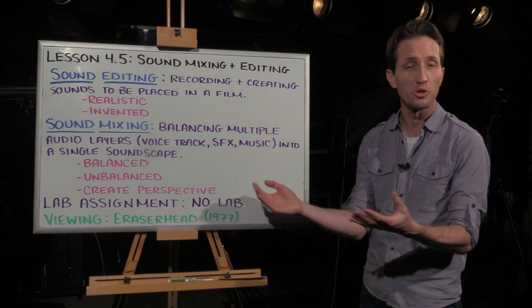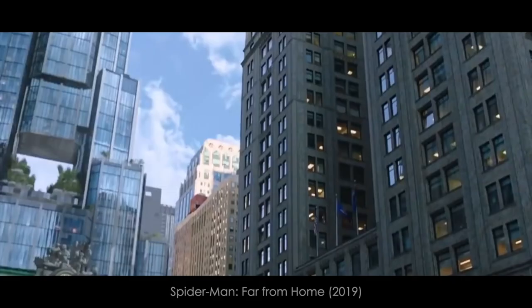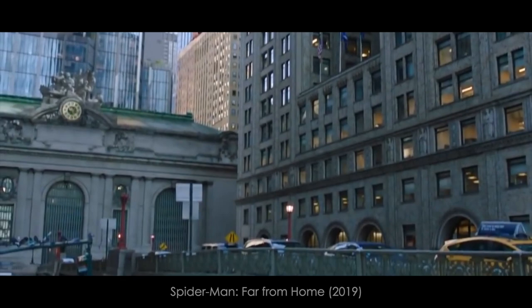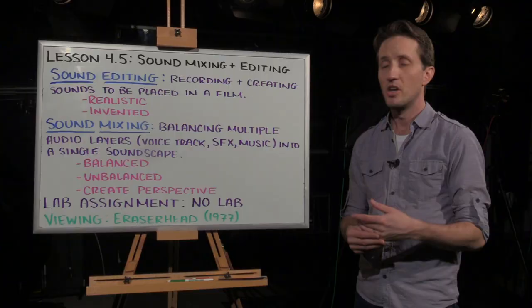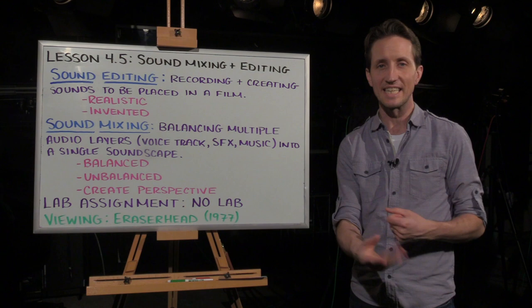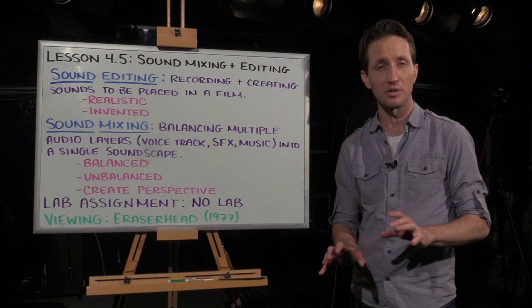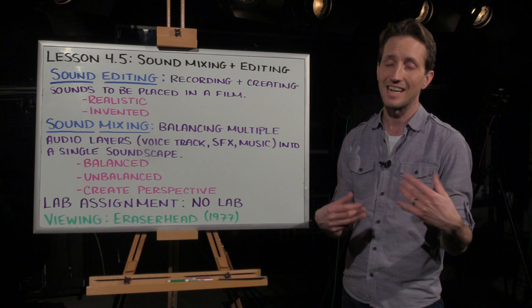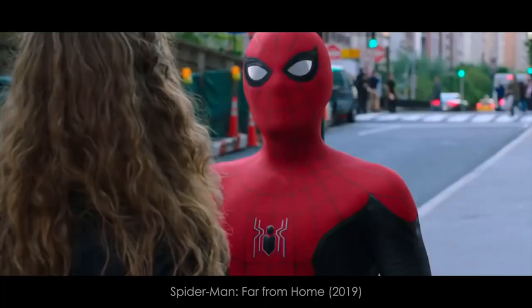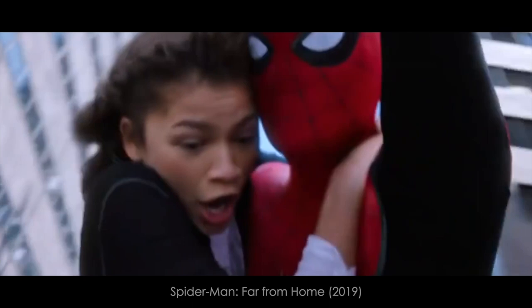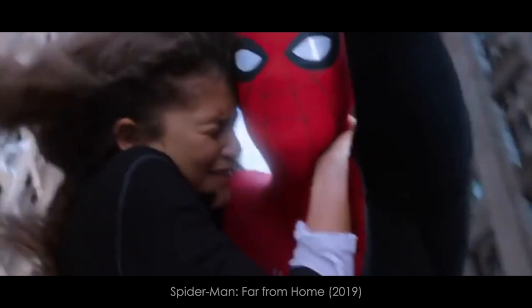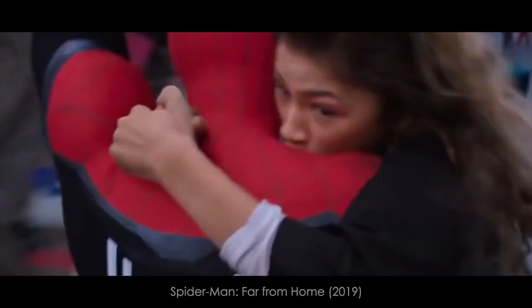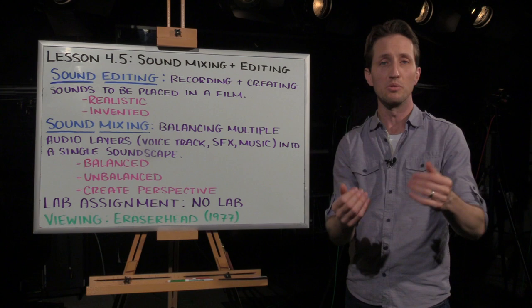You can also use your audio mix to create perspective, which is something we've already talked about. In this example from Spider-Man: Far From Home, notice how when Spider-Man is far away the sound of his slinging webs is rather quiet, and as he gets closer to the camera the sound effects get louder and louder. Notice that the music does not get louder, because that is a non-diegetic sound — it's not part of creating that perspective. Also notice how as Spider-Man moves from the right side of the screen to the left side, the audio is panned from the right channel to the left channel on your surround sound, to give the audience a more realistic sense of being right there with Tom Holland and Zendaya.